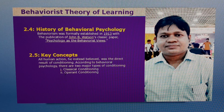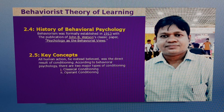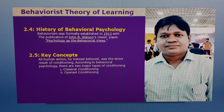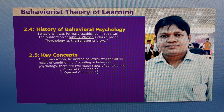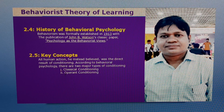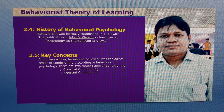From about the 1920s through the mid-1950s, behaviourism grew to become the dominant school of thought in psychology. Some suggest that the popularity of behavioural psychology grew out of the desire to establish psychology as an objective and measurable science. Thorndike developed the first three laws of learning: readiness, exercise, and effect.